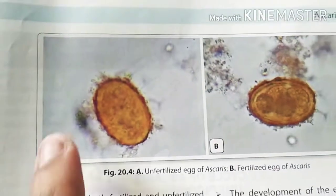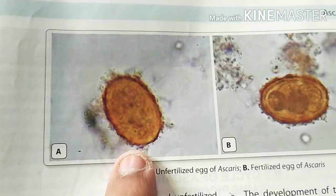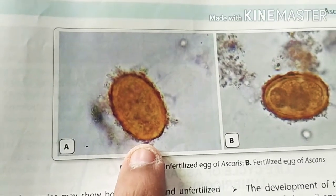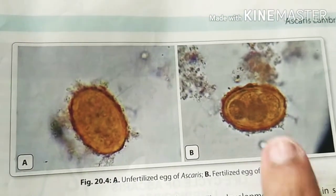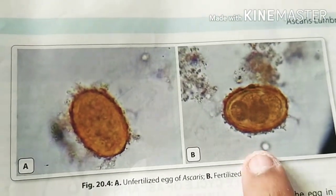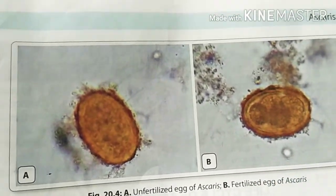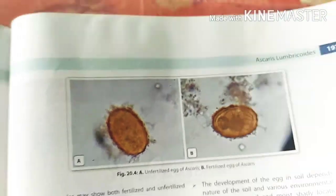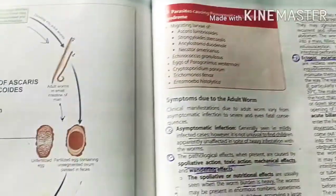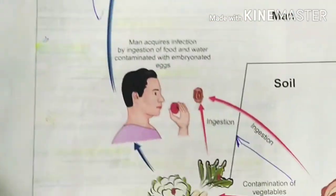You can see the two eggs here. One is unfertilized and this one is a fertilized egg. Now let us learn about the life cycle of Ascaris lumbricoides.